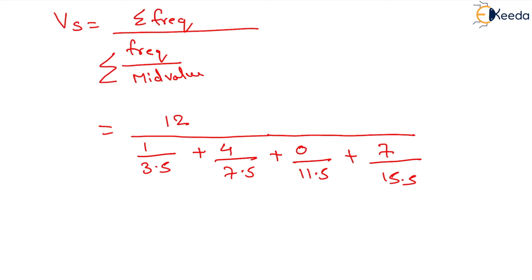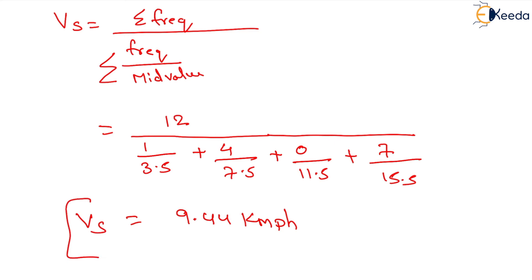After solving this, we get the space mean speed equals to 9.44 km per hour. So we have determined the value of space mean speed as well as the time mean speed. That is all about this numerical. Thank you very much, students.